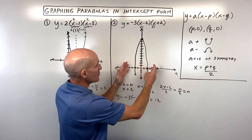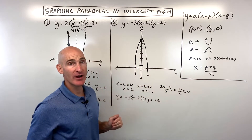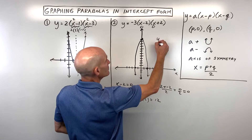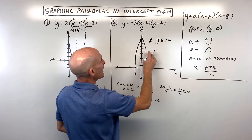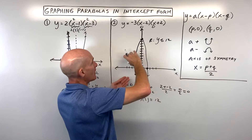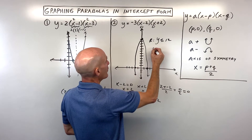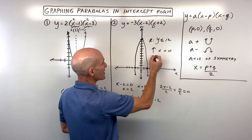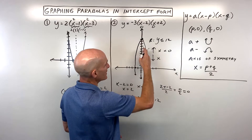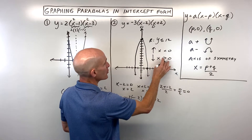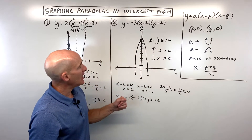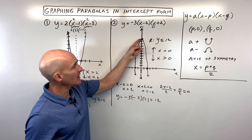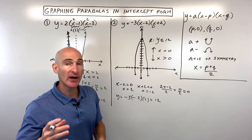The domain is all real numbers. The range is y less than or equal to twelve. The graph is increasing when x is less than zero — going up to the right — and decreasing when x is greater than zero. This graph has a maximum, and that high point or maximum is twelve.